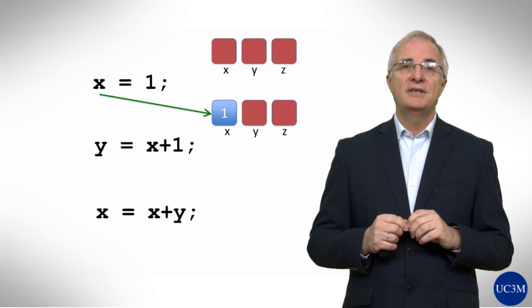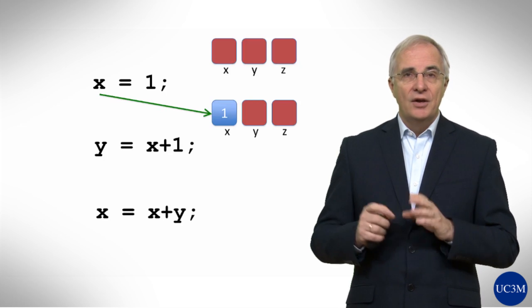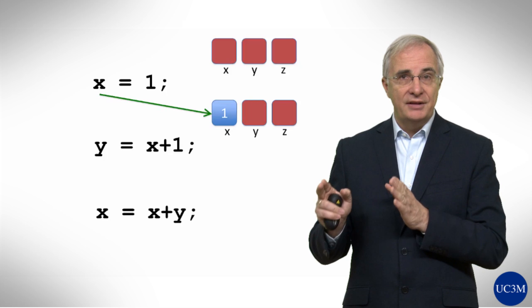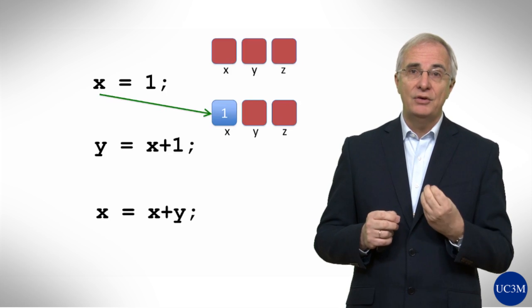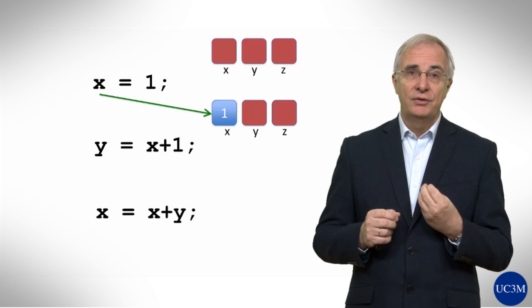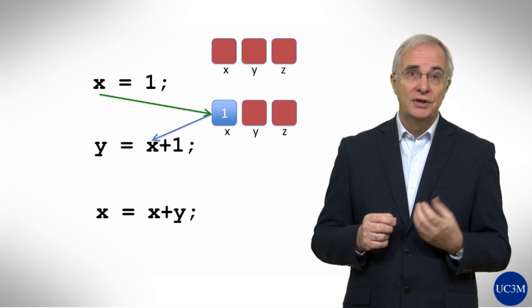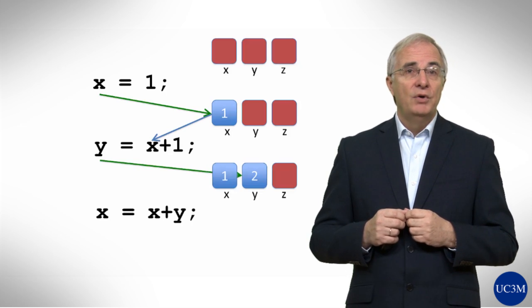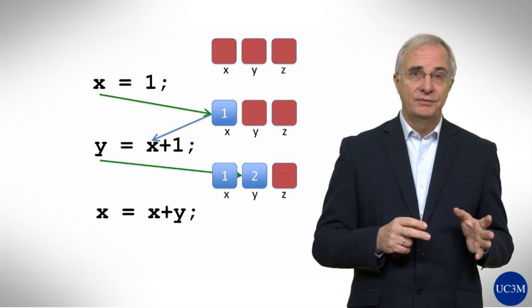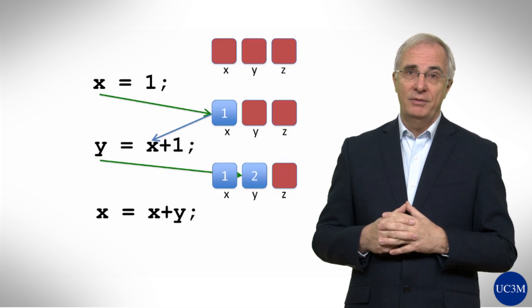The next assignment statement is y equals x plus 1. First, we have to evaluate the expression at the right, x plus 1. To this end, we need to get the values stored in x. So, the expression to evaluate is 1 plus 1, so 2. And 2 is stored in y. We always work from right to left. First, the expression has to be evaluated and then stored in the variable.